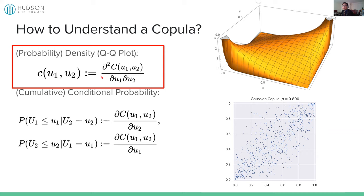Strategy one is very robust: if you fit a price series with different types of copulas and choose by maximum likelihood or information criteria, the top candidates usually don't differ much in performance. Now let's move on to strategy number two — we're going to work on returns instead. This fundamentally addresses the issue that prices are not stationary. We call these the MPIs — mispriced indexes. Previously we calculated conditional probabilities on prices; now we calculate conditional probabilities on returns. It's just a fancy name.